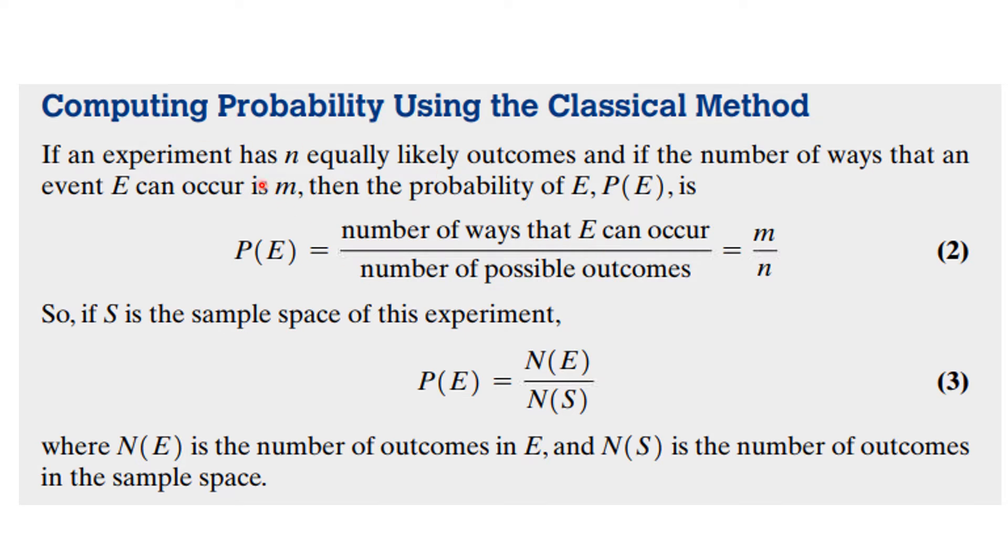The classical model then is if an event has equally likely outcomes and if the number of ways that it can occur is M, then the probability of it happening, and again this is a theoretical analytical one, is M divided by N. And so if S is the sample space, you'd say the number of things in the sample space divided by the number in E, and that is the probability of event E.